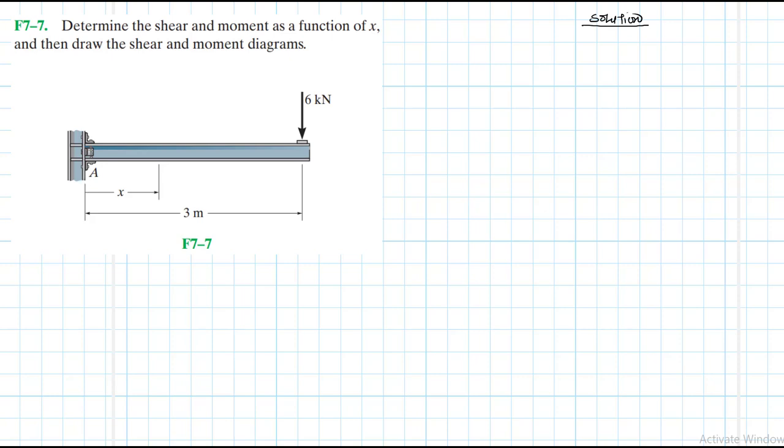To start with we are going to draw the free body diagram. At A we expect Ay, we also expect Ax, we also expect moment. We are going to assume it in the anticlockwise direction which is MA.